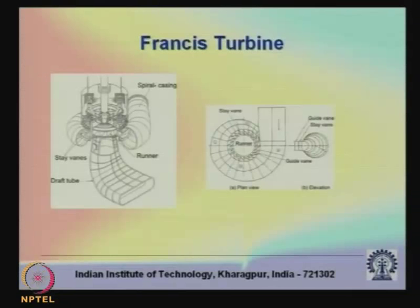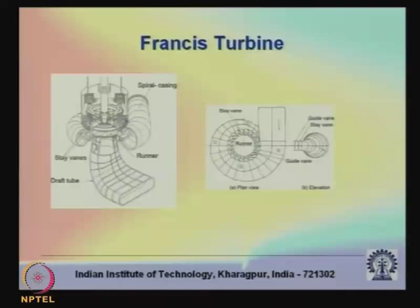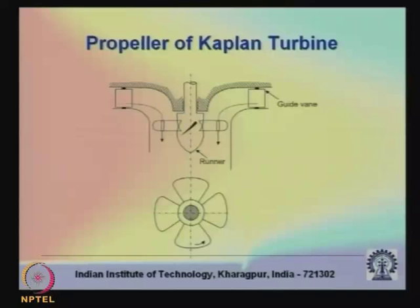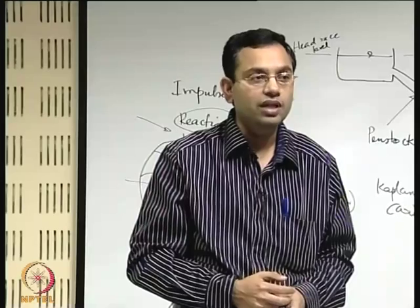Looking at the Francis turbine in more engineering detail: the fluid does not enter through a uniform area passage but through a continuously changing area passage, which is important. For the Kaplan turbine, the fluid enters radially and then leaves axially, which has significant implications for the design of the blades, which are typically twisted in nature. We will continue in the next lecture.